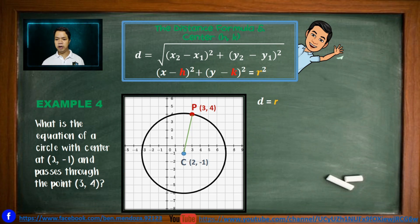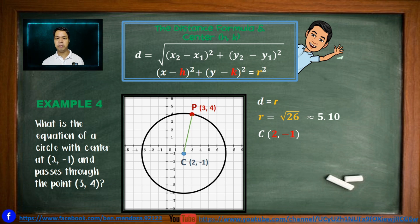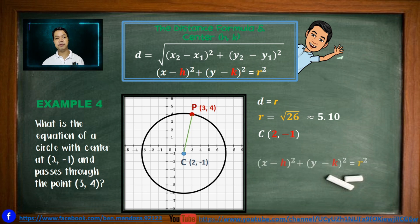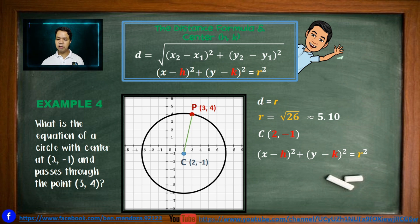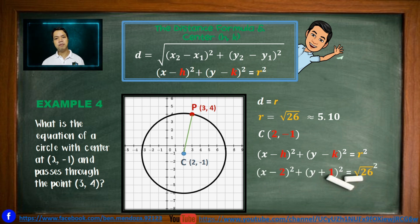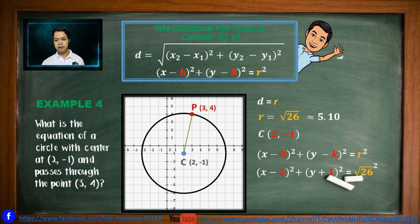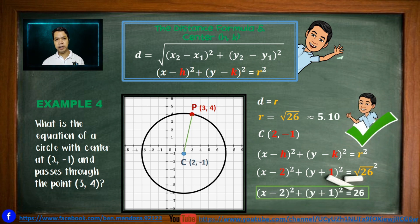Since D equals R, R has a value of square root of 26, and the center is at (2, negative 1). Applying the standard formula for center at (H, K): (x minus H)² plus (y minus K)² equals R². By substitution, we get (x minus 2)² plus (y plus 1)² equals (√26)², which simplifies to give us the final answer: (x minus 2)² plus (y plus 1)² equals 26.